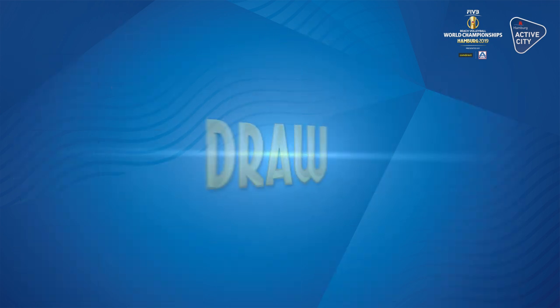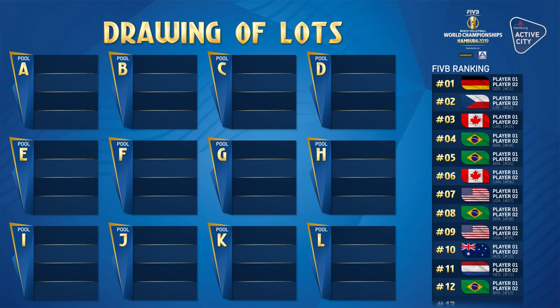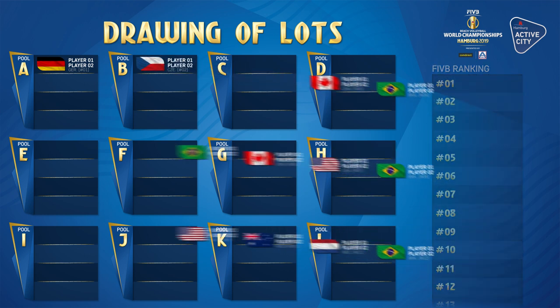Now here comes the draw. Firstly, the top 12 seeds are each placed into each of the 12 pools in accordance to their respective seating points. So the No. 1 seeds are placed in Pool A, the No. 2 seeds in Pool B, and so on.